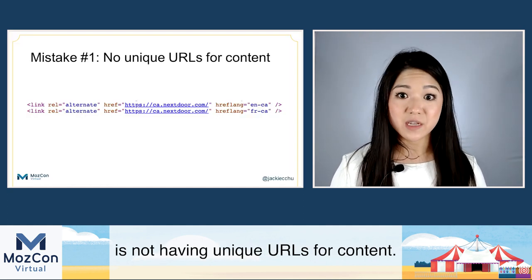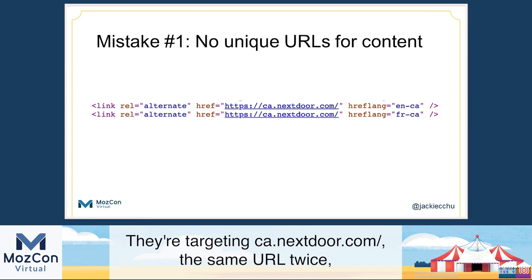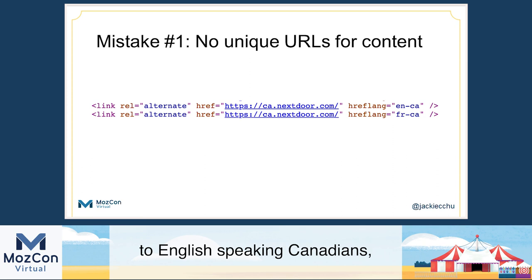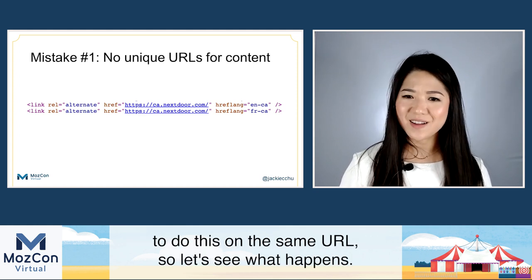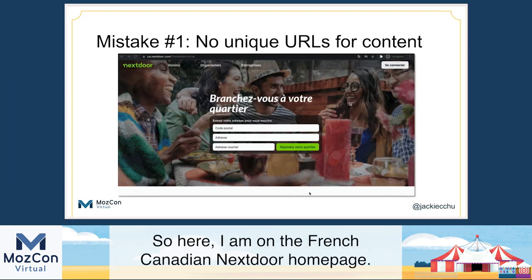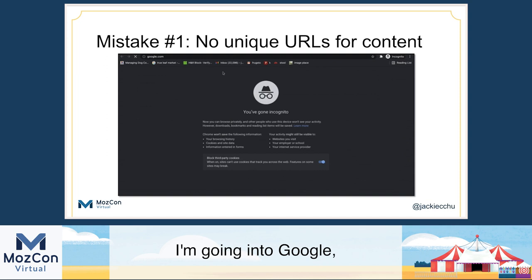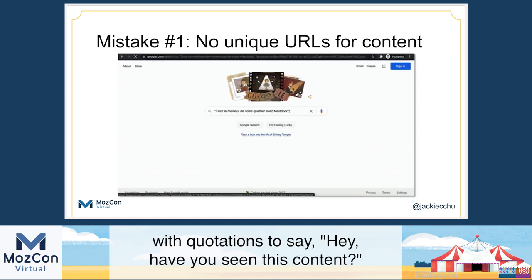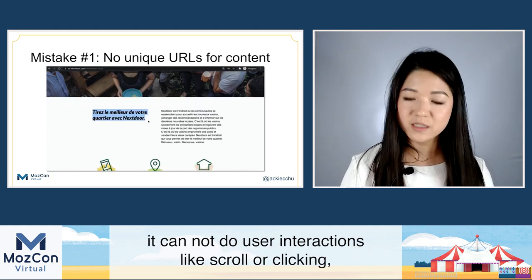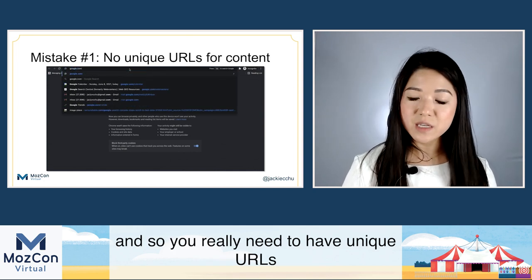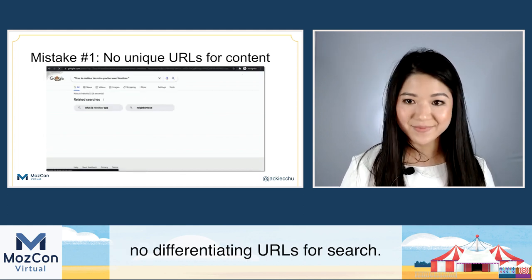One of the biggest mistakes is not having unique URLs for content. Looking at the Canadian version of nextdoor.com, they're targeting ca.nextdoor.com with the same URL twice — once for English-speaking Canadians and once for French-speaking Canadians. On the French-Canadian nextdoor homepage, if I grab the H1 and search for it in Google with quotations, there's no result. Google fundamentally needs a URL to index and discover content. It cannot do user interactions like scroll or click. You need unique URLs for Google to index and discover content.